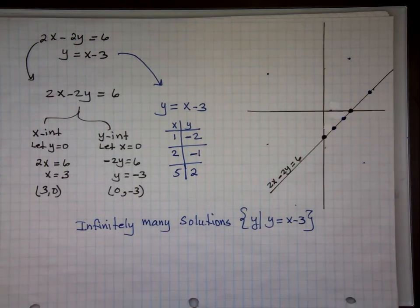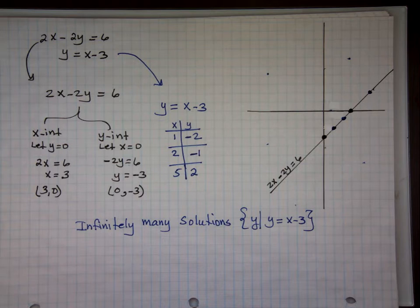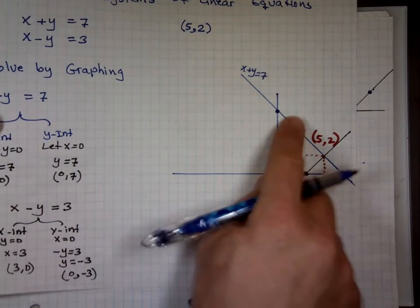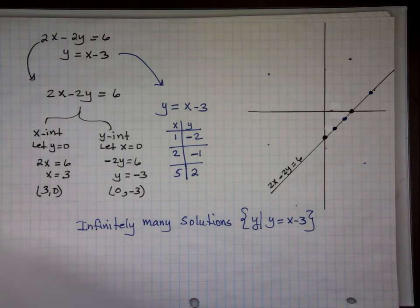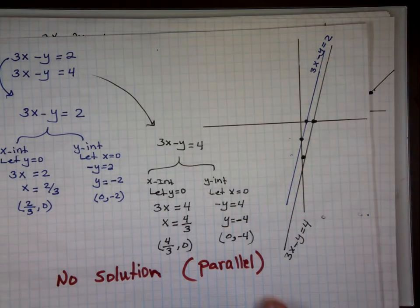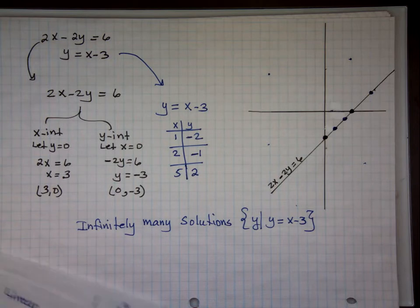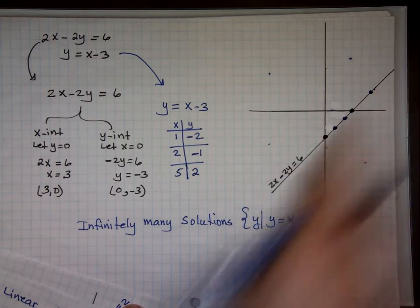So when you have the same line, you have infinite solutions. These are the three possible outcomes when you solve a system of equations — there are no other possibilities. It could be one point like the first example, no solution when the lines are parallel, or infinite solutions when it's the same line. Straight lines will never cross at only two points — it's either only one point, no point, or many points when they're on top of each other.